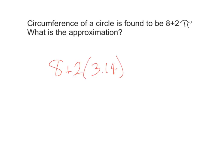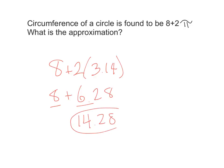We take 2 times 3.14, that's 6.28 plus 8. Then 8 plus 6 is 14, plus 2.8. So that is our approximation of 8 plus 2 pi. On this question we just have to plug in pi and reduce our answer.